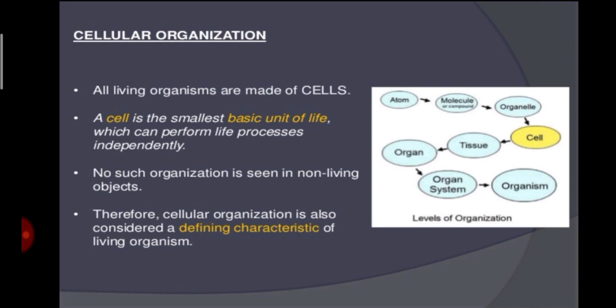The fourth characteristic is cellular organization. Cells are the building blocks of all living things — whether plants, animals, or humans. Unicellular organisms are made of a single cell, while multicellular organisms are formed by millions of cells. The cells contain protoplasm — the living matter — and cell organelles, which perform several activities at the cellular level resulting in various life processes. Therefore, cellular organization is also considered a defining characteristic of living organisms.